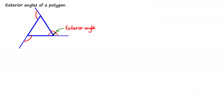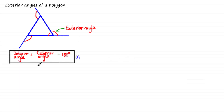The interior and the exterior angle lie on the same straight line. And the property that angles on a straight line sum to 180 degrees gives us our first formula: the interior angle plus the exterior angle of a polygon is equal to 180 degrees.